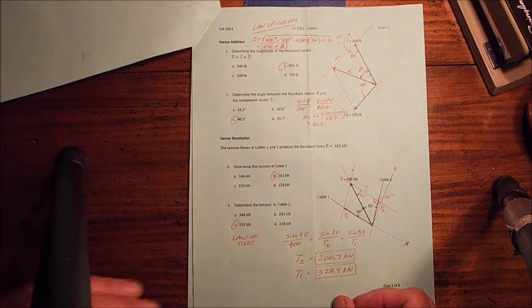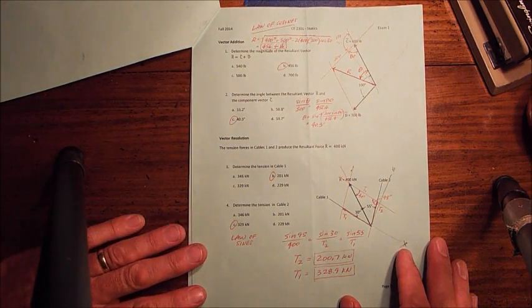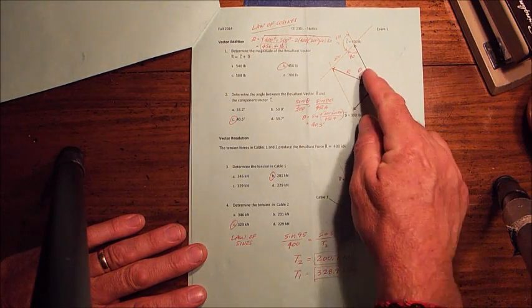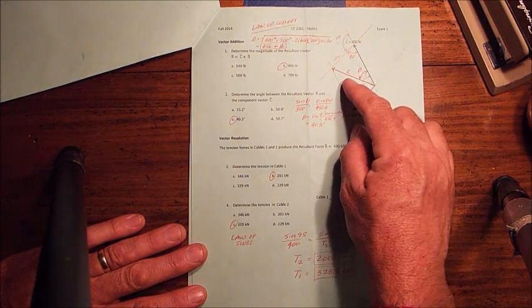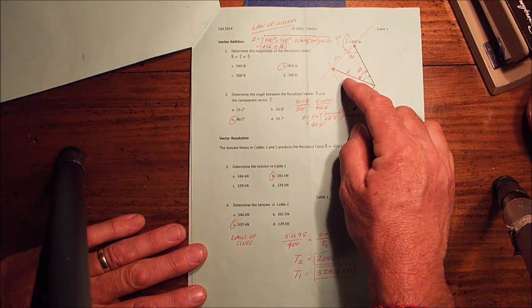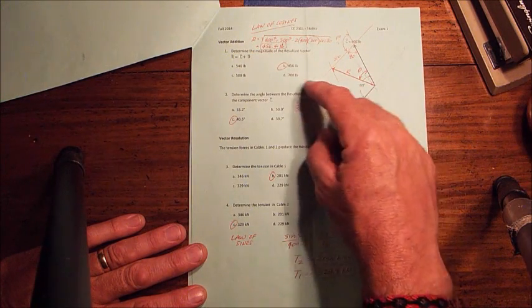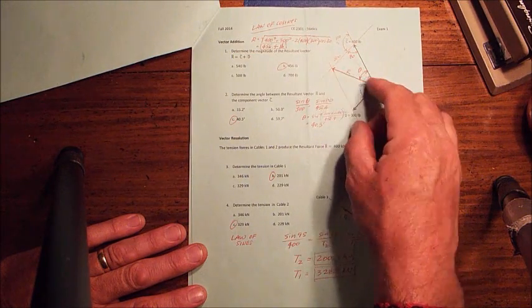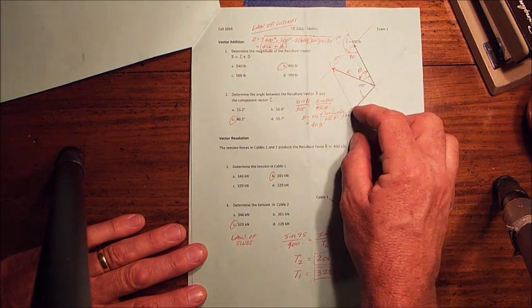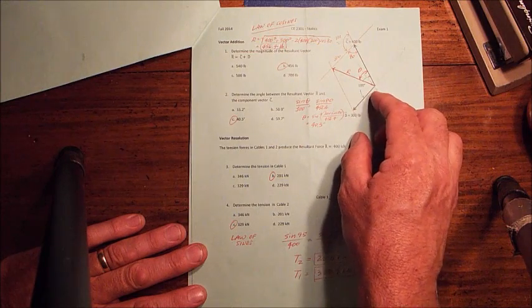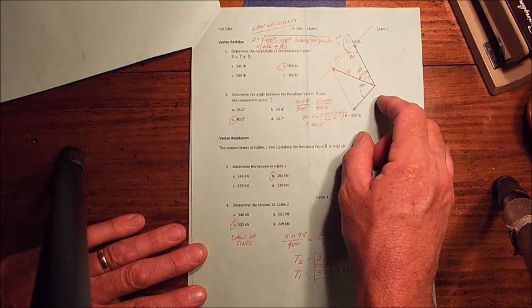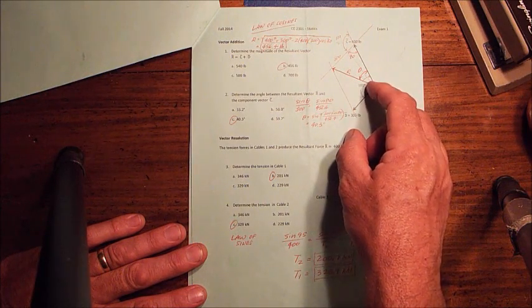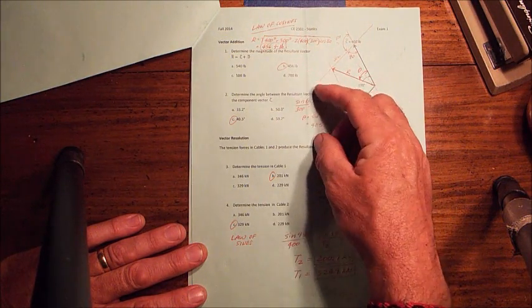The first page had a couple of vector problems on it. The first one we were given two vectors, C and D, and we wanted to add them up vector-wise and get the resultant in part one. You can use the Cartesian method and assume an x-axis and y-axis, break them up, figure out the components, and add them up.